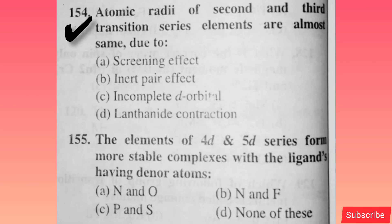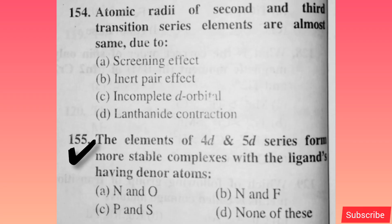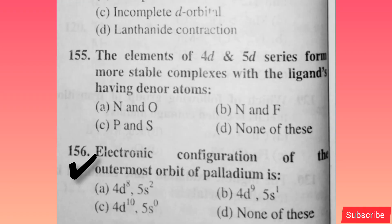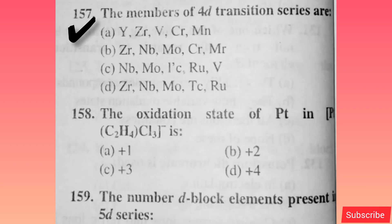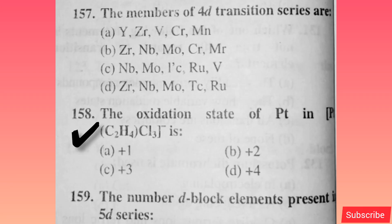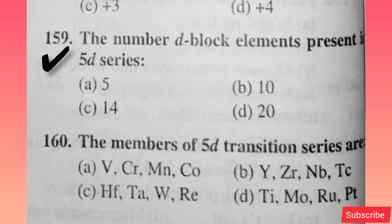Reactivity of transition metals — option A is correct. Atomic radii of second and third transition series elements are almost the same due to — option D is correct. The elements of 4D and 5D series form more stable complexes with ligands having donor atoms — option C is correct. Electronic configuration of the outermost orbit of palladium is — option C is correct. The members of the 4D transition series are — option D is correct. The oxidation state of platinum in [Pt(C2H4)Cl2]⁻ is — option B is correct. The number of d-block elements present in the 5D series — option B is correct.